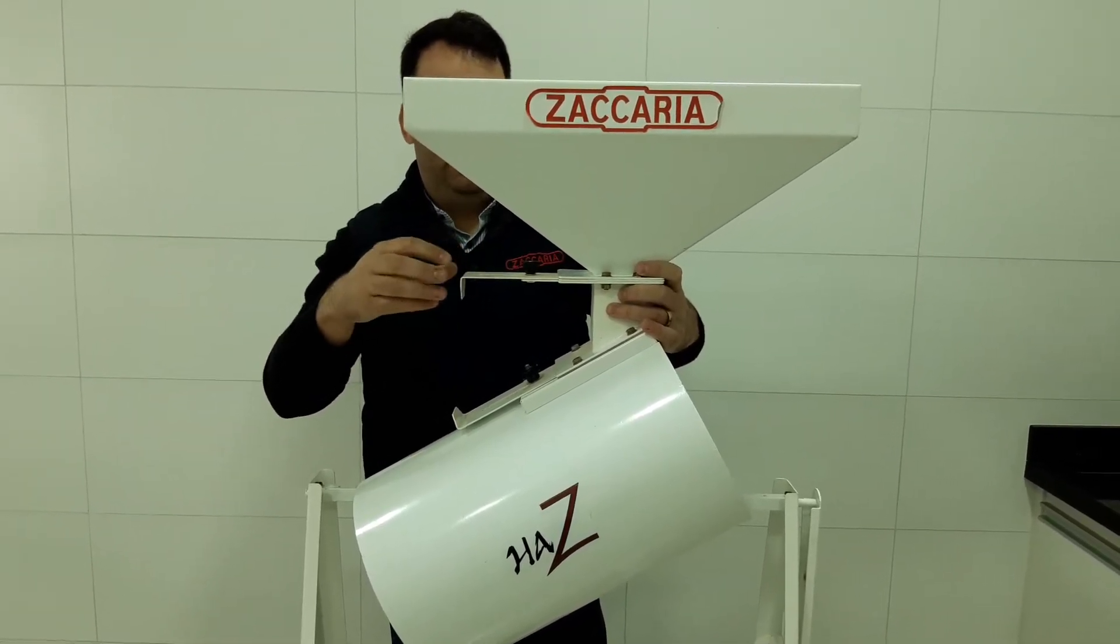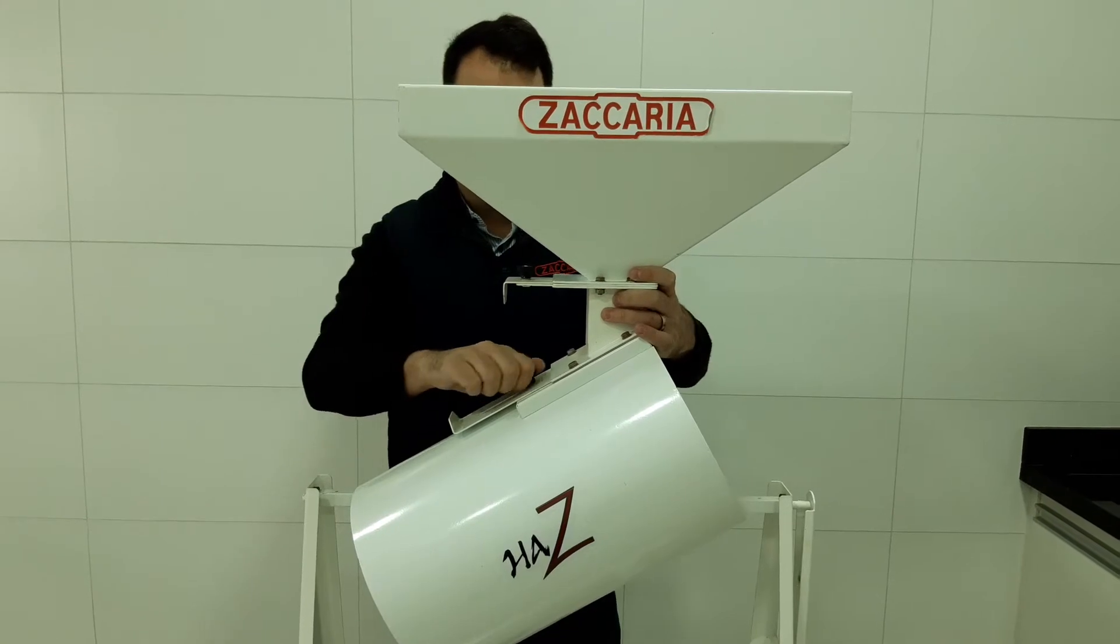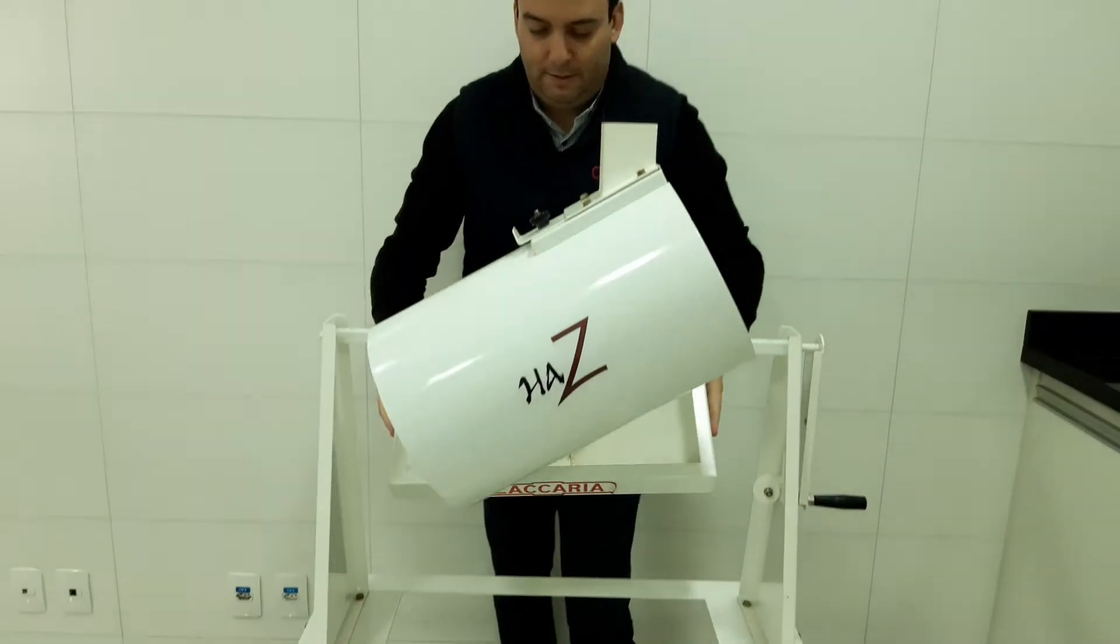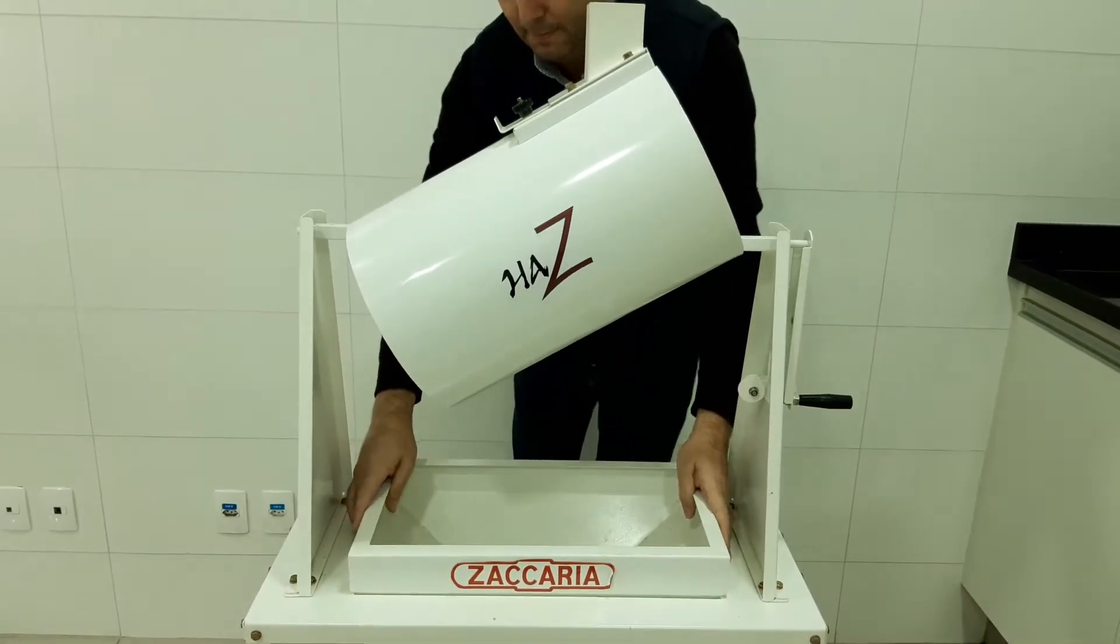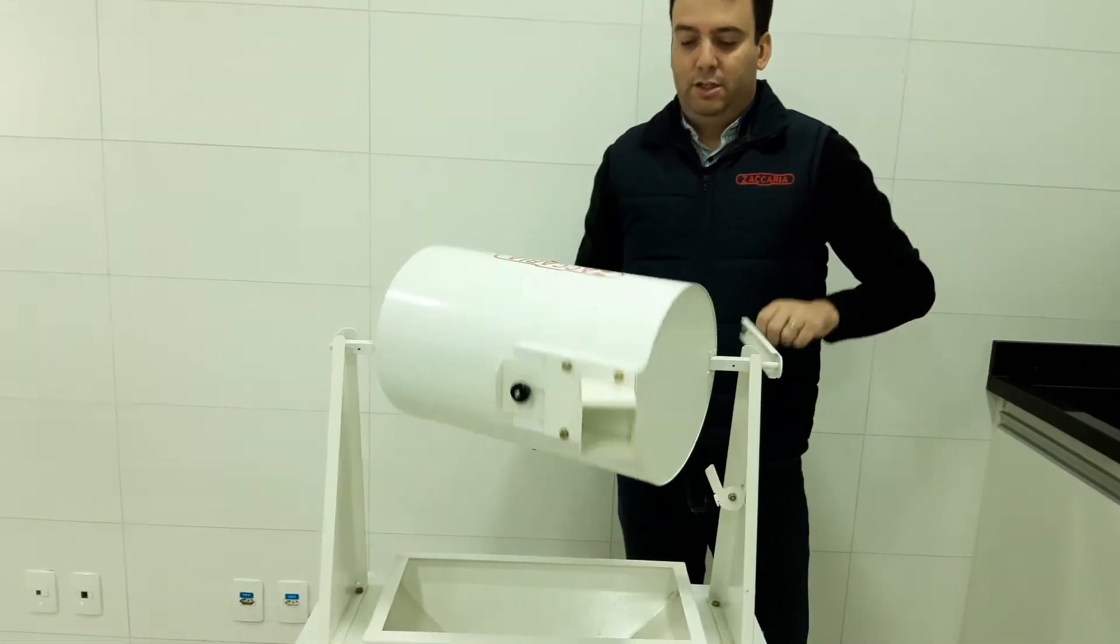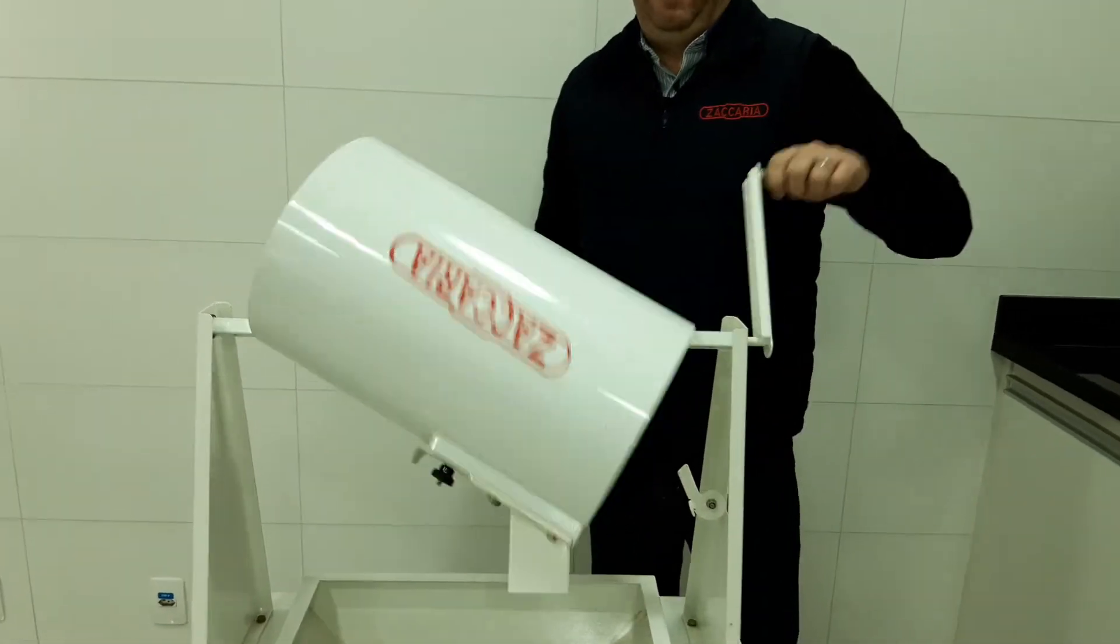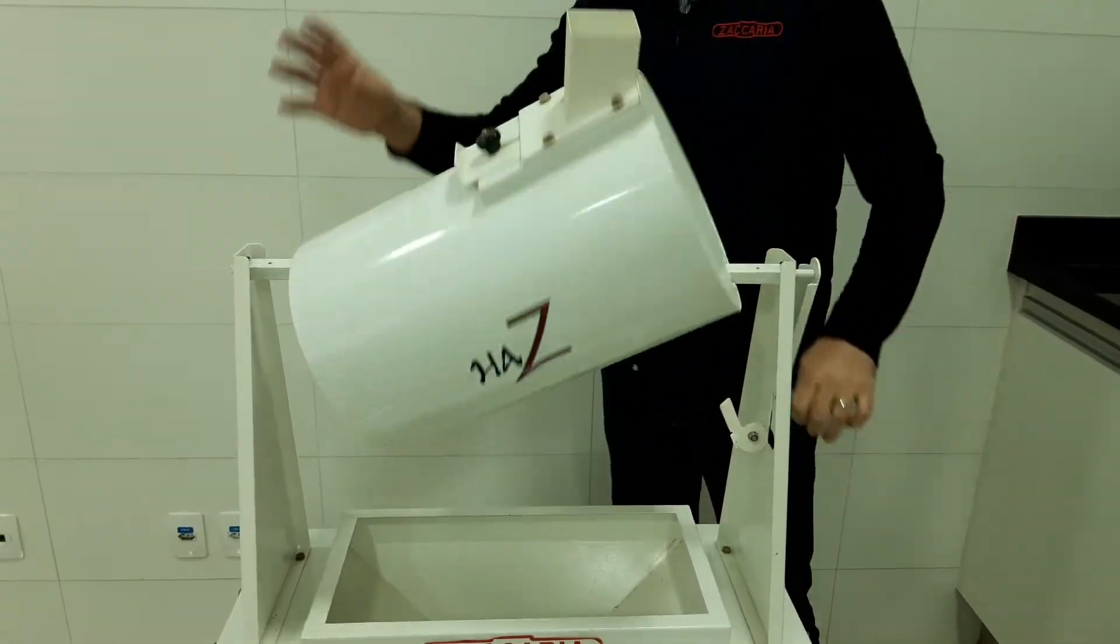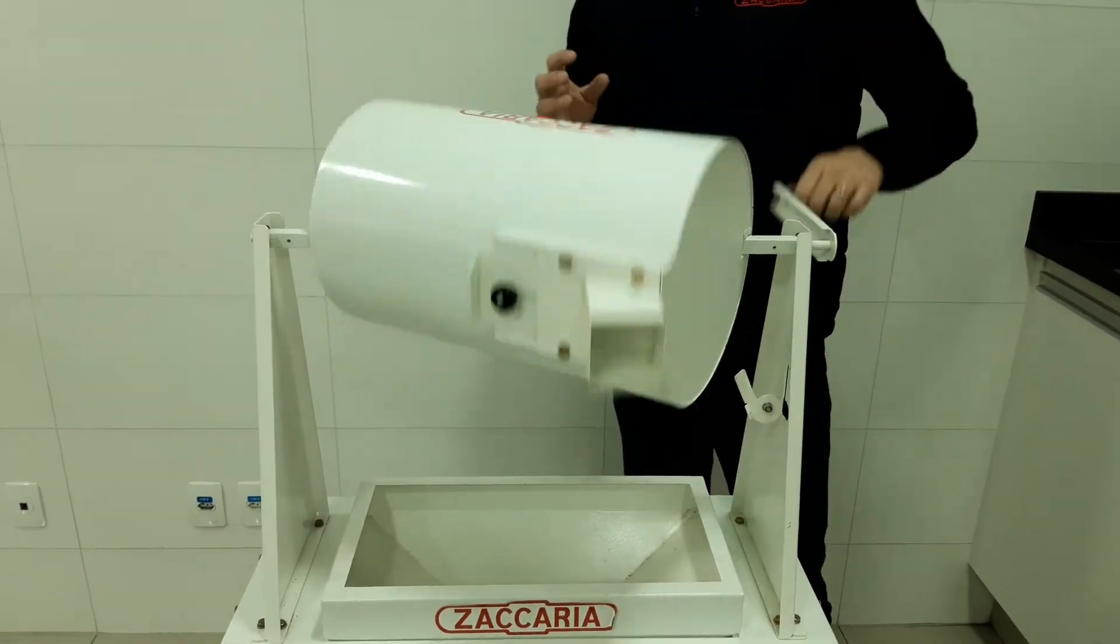And here is the inside equipment. And now we are going to turn it on to homogenize the paddy. Why do we do that? To make sure the paddy will be uniform.